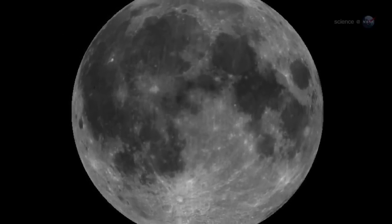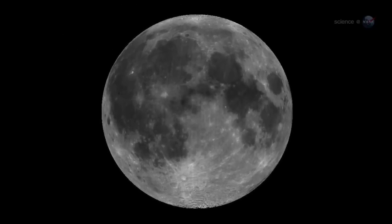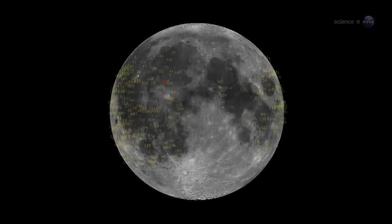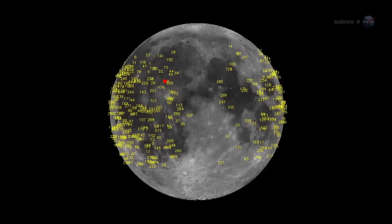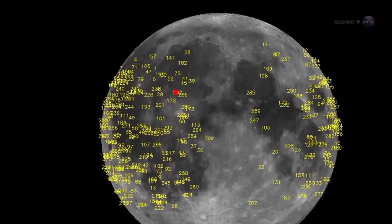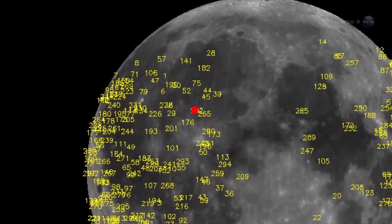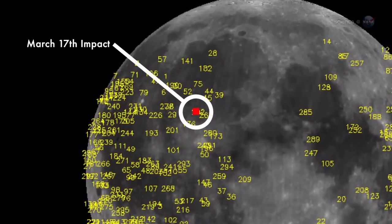Unlike Earth, which has an atmosphere to protect it, the Moon is airless and exposed. Lunar meteors crash into the ground with fair frequency. Since the monitoring program began in 2005, NASA's Lunar Impact Team has detected more than 300 strikes, most orders of magnitude fainter than the March 17th event.